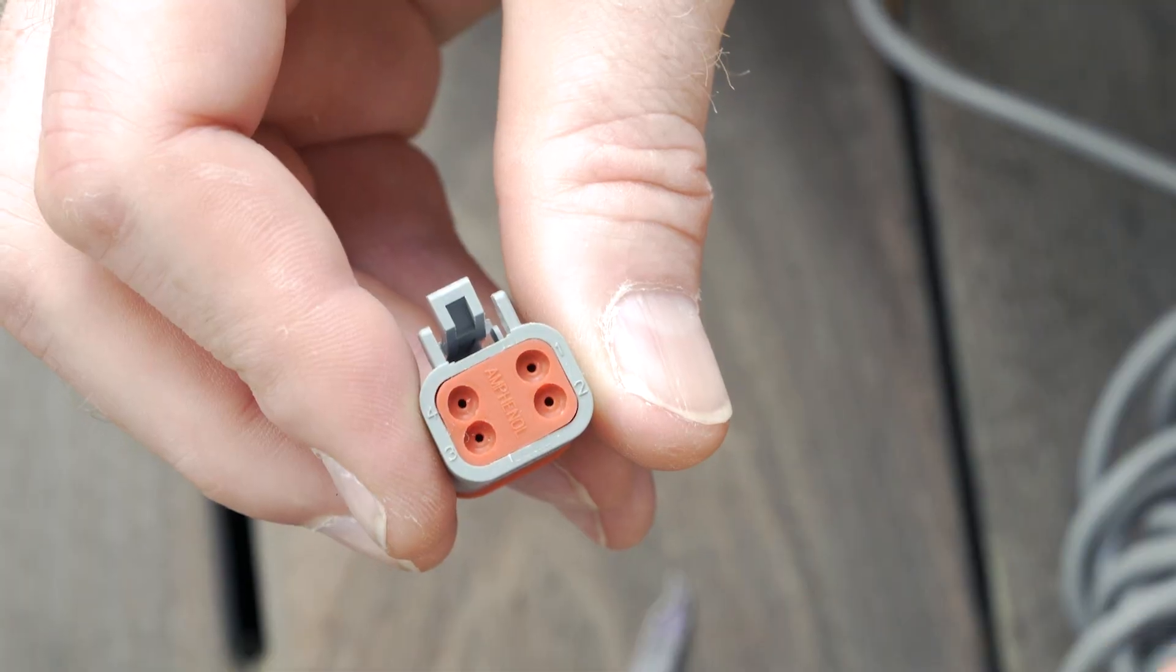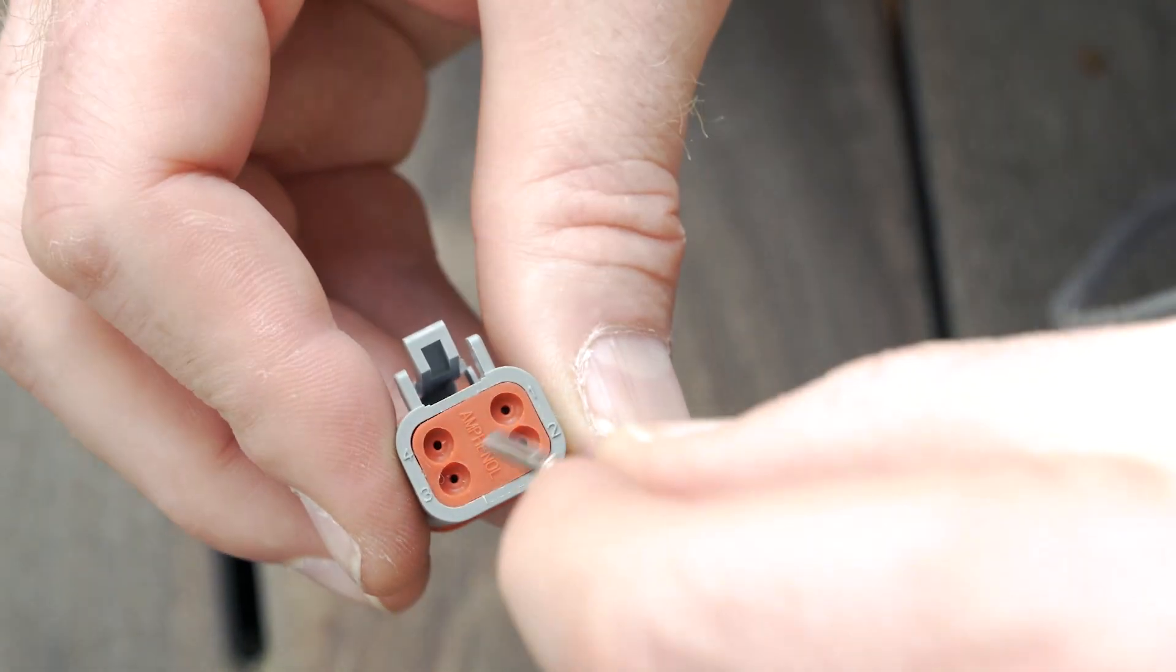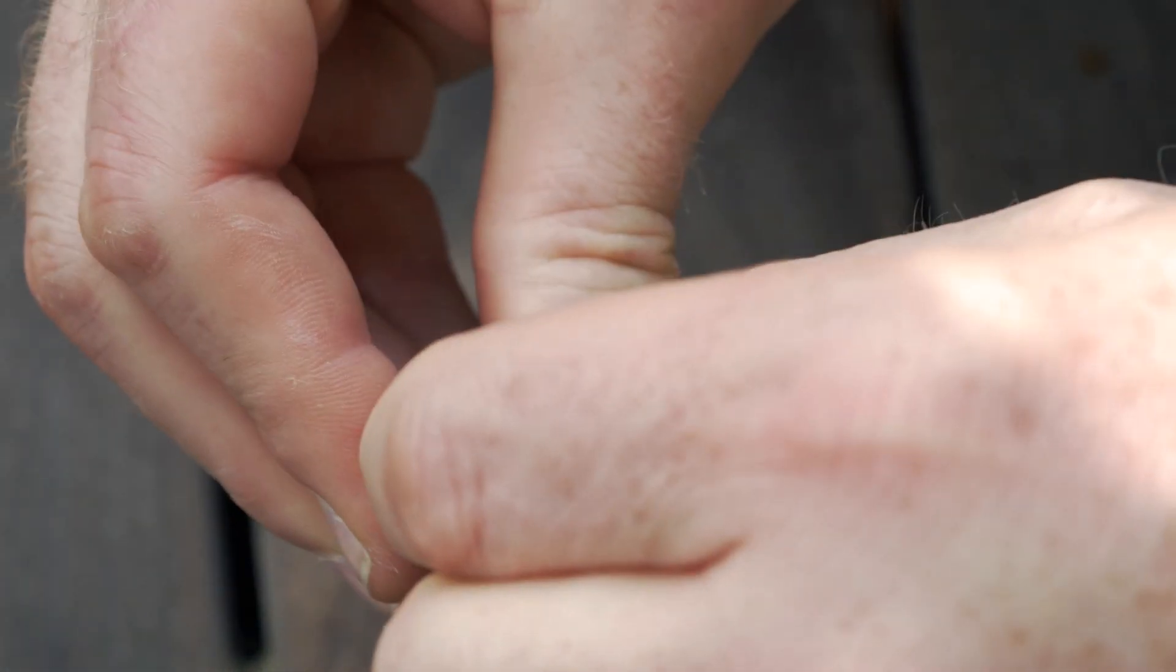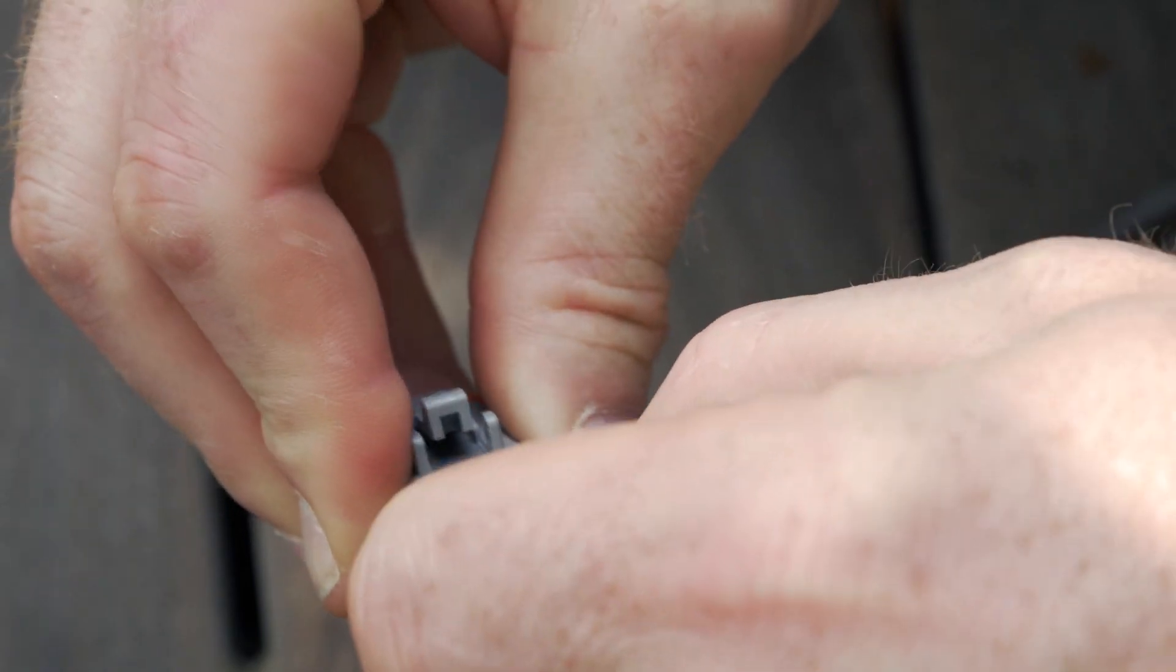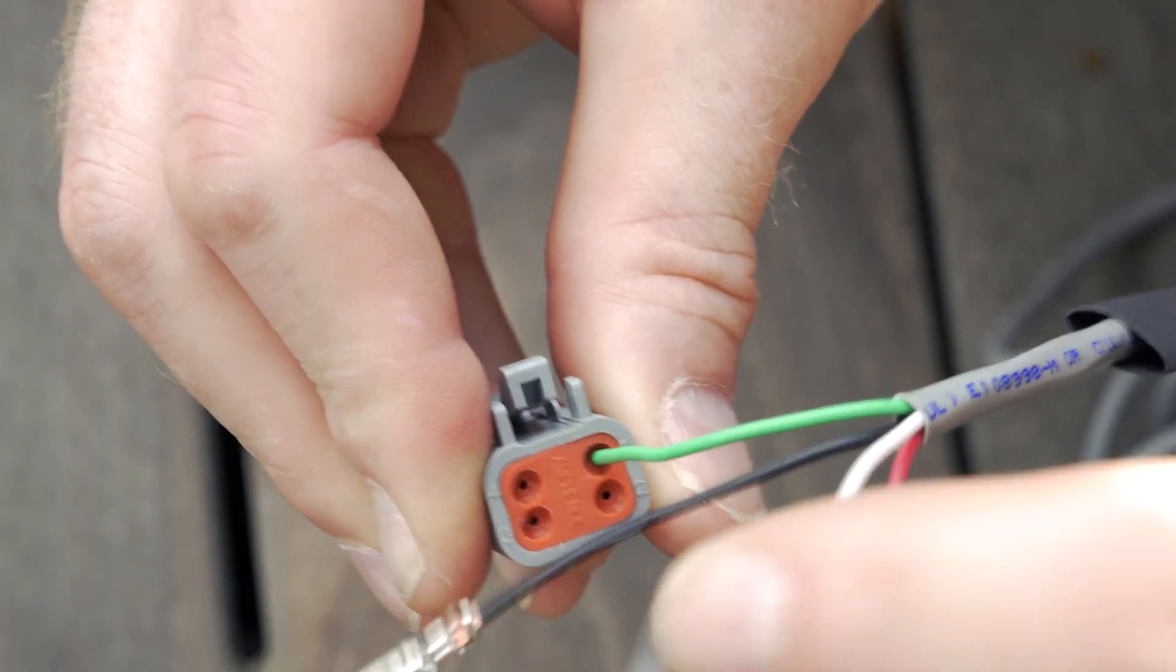What you want to do is grab the wire by about an inch from the socket and just push it in and insert it fully into the socket. You'll feel and hear a click when it's inserted properly. You do this for all four of the wires.